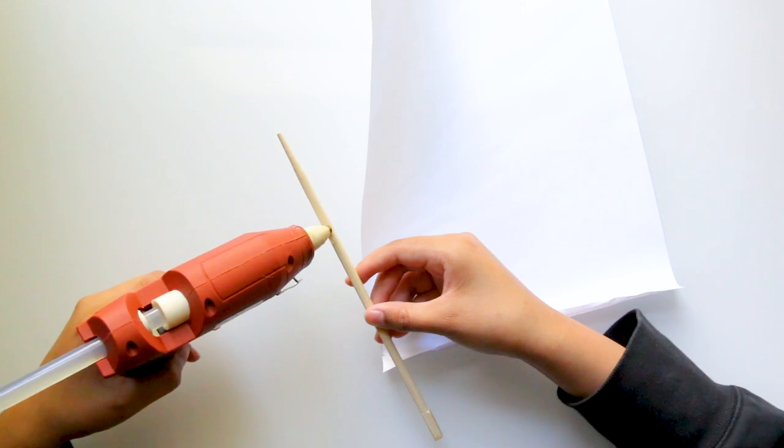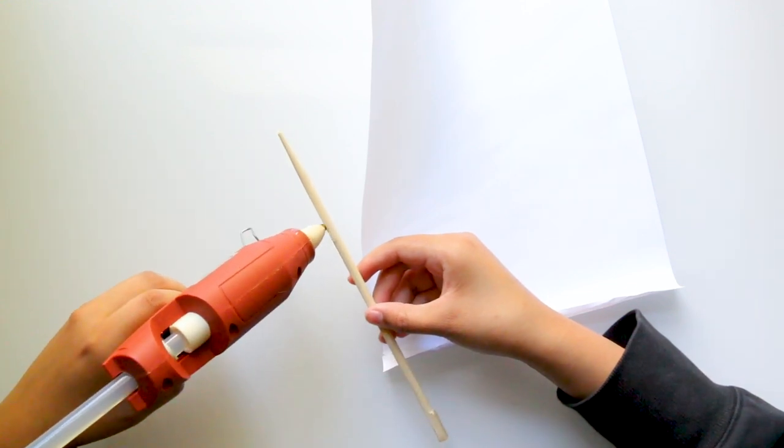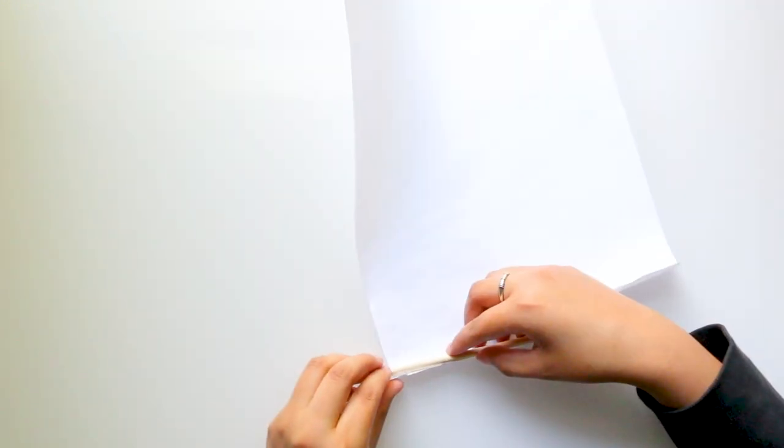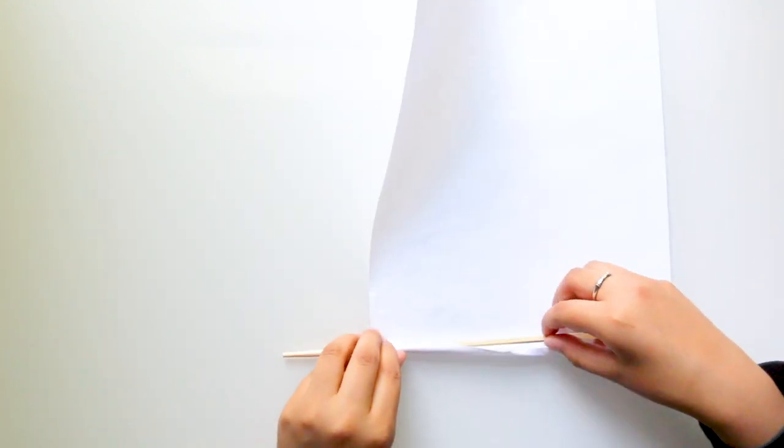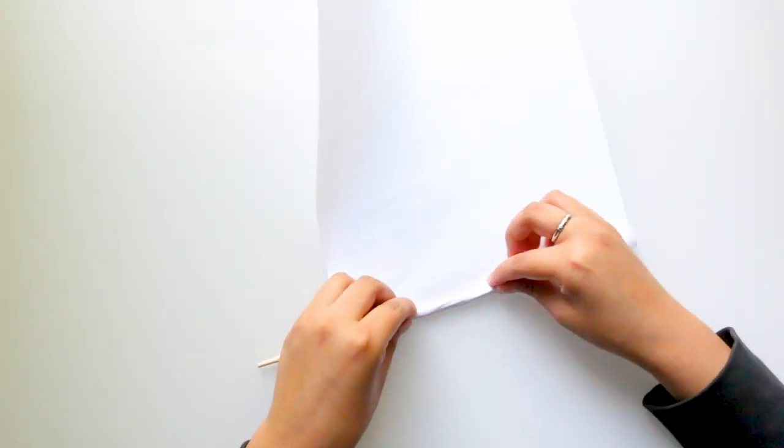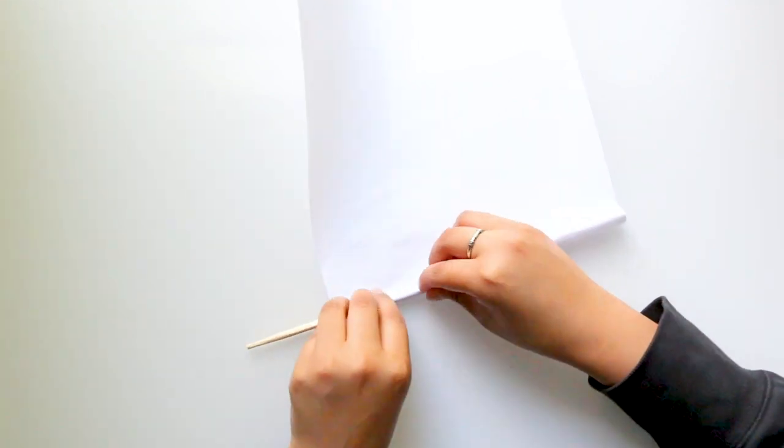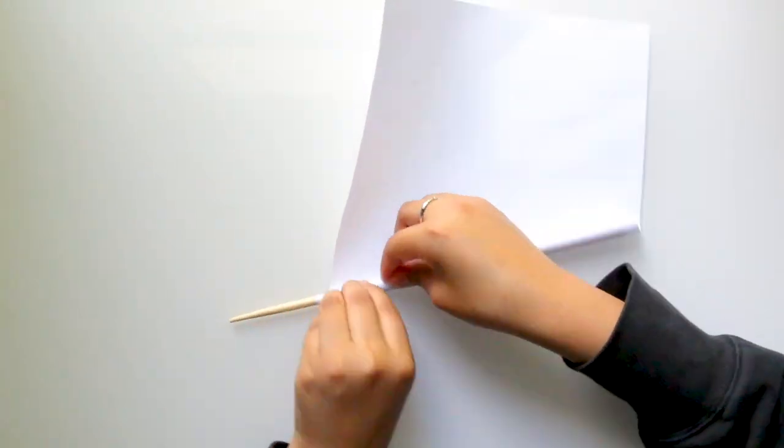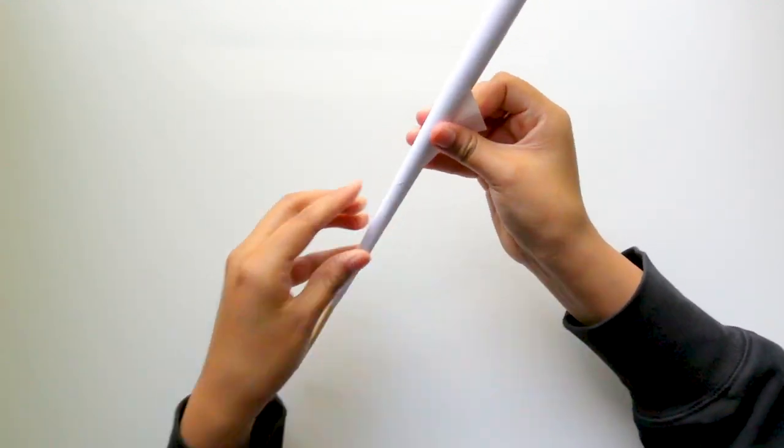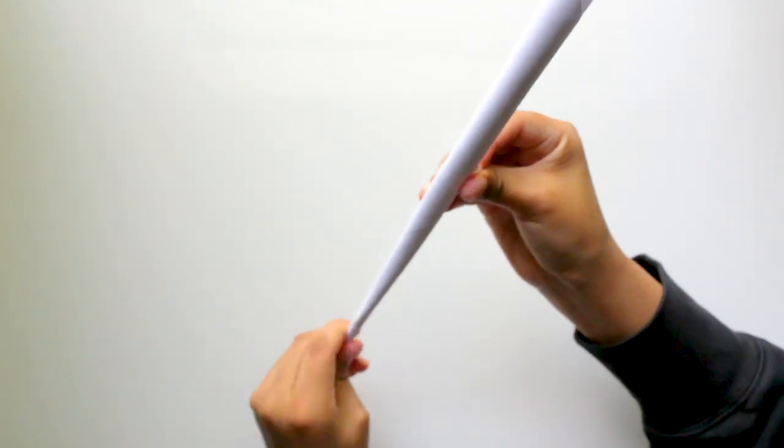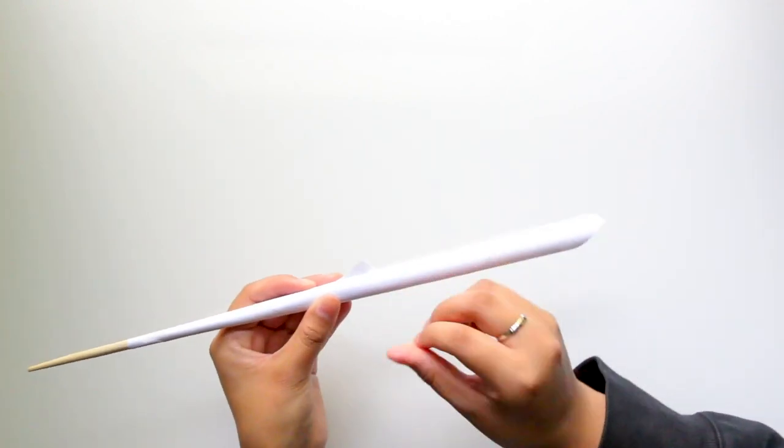For the chopstick version, add hot glue a little above the center of the chopstick. Place it on one point of the paper and roll it upwards on a curve. Same steps as the pencil version, only this time I placed the paper vertically as I rolled. Pull the paper to make sure it's securely wrapped, then add a drop of hot glue and glue it down.